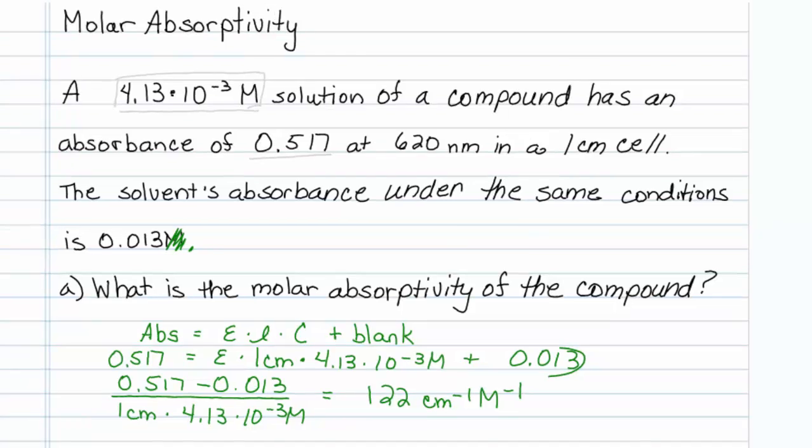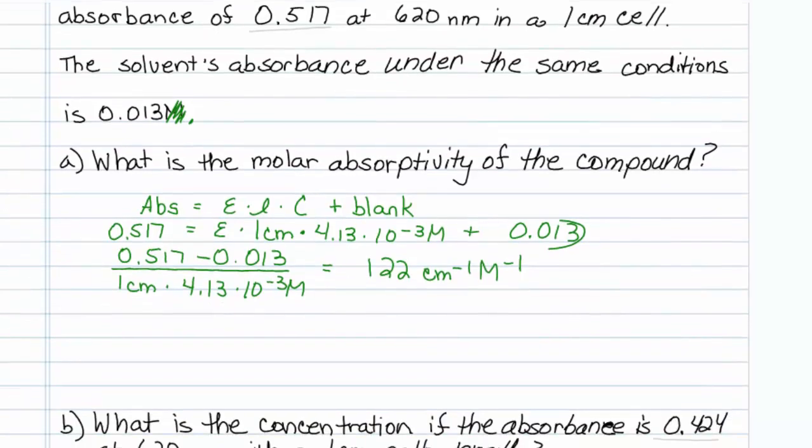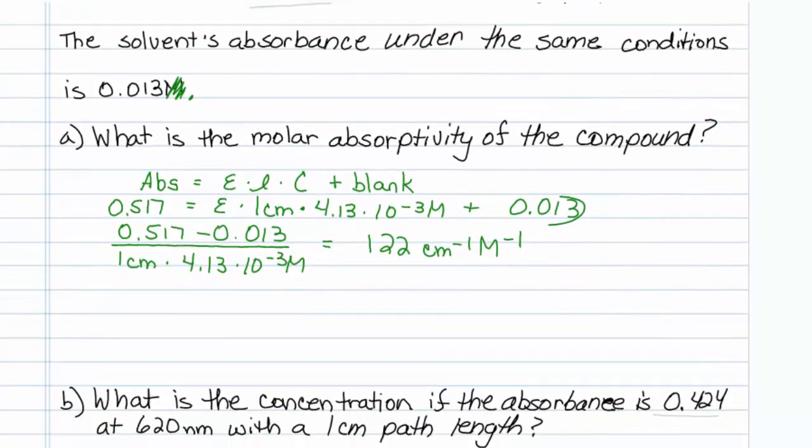So far, so good. The next question asks: What is the concentration if the absorbance of some unknown sample at the same wavelength and path length is 0.424?